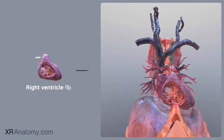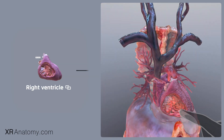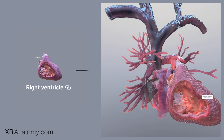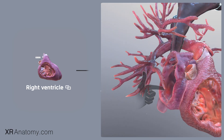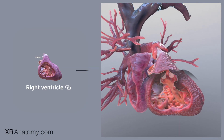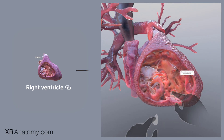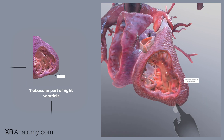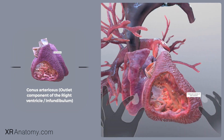The right ventricle is the heart's most anterior chamber, seamlessly continuing from the right atrium. Situated anteriorly and to the left of the atrioventricular orifice, it receives blood from the right atrium. The right ventricle has a triangular shape and comprises three main parts: an inlet, a trabecular region, and an outlet, each contributing to its essential role.